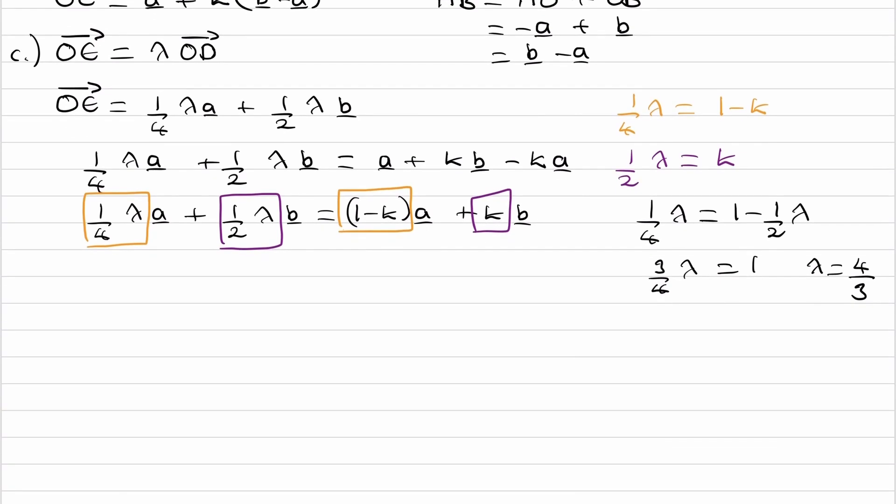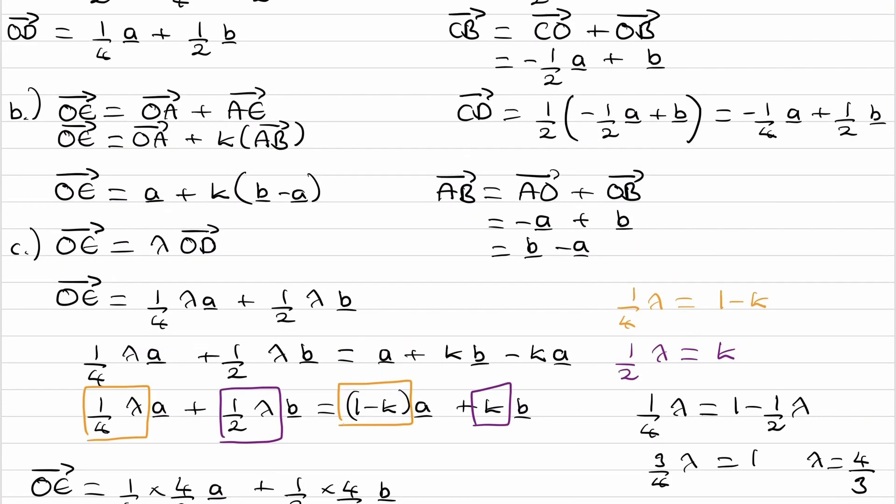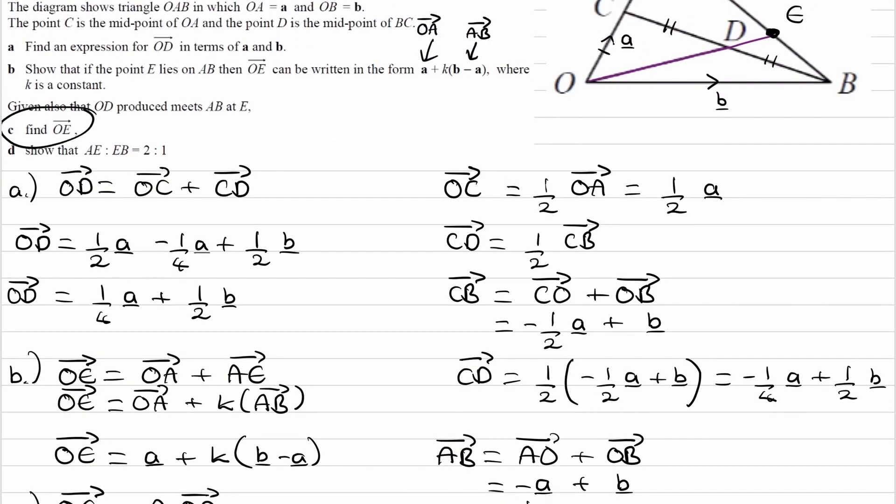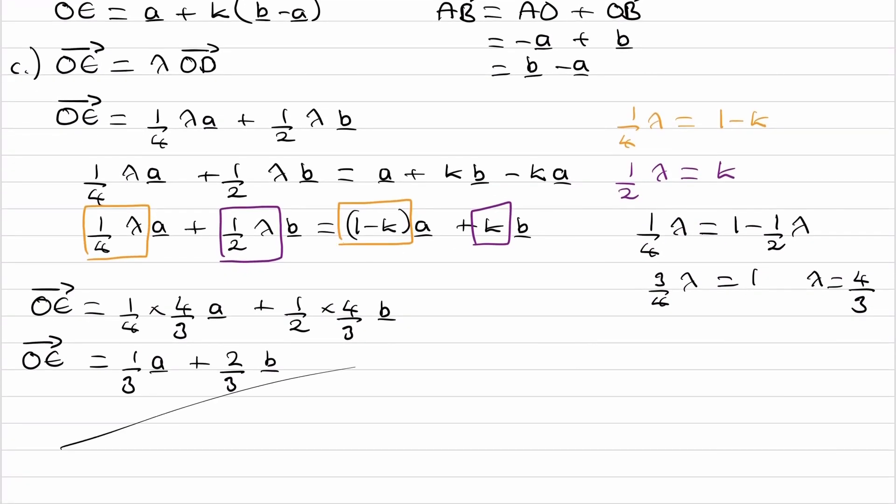So if lambda is 4 over 3, then we can work out where OE is. OE is then a quarter times 4 over 3 A plus a half times 4 over 3 B. And this will be 1 third of A plus 2 thirds of B. So part C was asking us to work out the vector OE, and we have that now here.